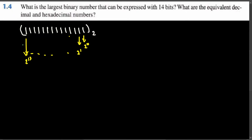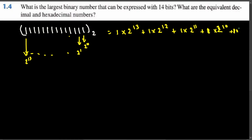Since all the digits are one, we multiply each of these powers of two by one. So we get: one times two to the thirteenth, plus one times two to the twelfth, plus one times two to the eleventh, plus one times two to the tenth, plus one times two to the ninth, plus one times two to the eighth, plus one times two to the seventh, plus one times two to the sixth.